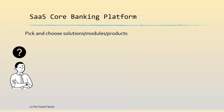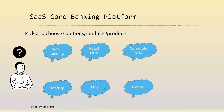So what exactly does this mean? It means that the core banking is split into multiple modular architecture, maybe microservices based, and these modules are integrated with each other. However, the customer is free to choose any of these. A typical customer can choose retail lending, retail DDA, and probably APIs because it's a retail bank; or another wholesale bank might just take corporate DDA along with treasury.